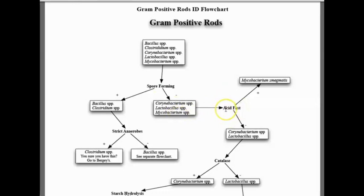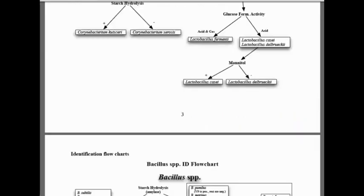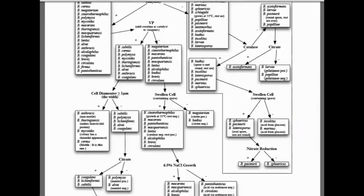And here is the first step to differentiate Mycobacterium from Corynebacterium, Bacterium, and others based on water loss and so on. This flow chart is continued through further tests depending on the systematic differentiation between these bacteria.